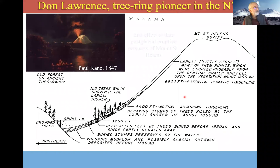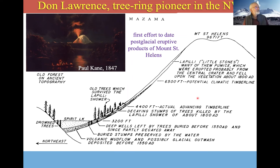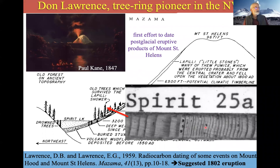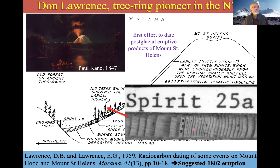A pioneer in tree dating was Don Lawrence, a botanist who grew up near the Columbia and spent summers in the Columbia Gorge. He was the first person to core trees at Mount St. Helens and decide they died in 1802—he saw narrow rings he thought recorded defoliation trauma from ash. He was working in an area north of the volcano where he found a thick ash layer and cored still-living trees that had survived.